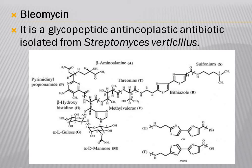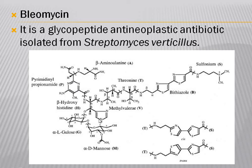The first part is the DNA binding domain, which consists of a sulfonium group and a bithiazole ring (two thiazole rings). There are two possible planar orientations — cis and trans — of the two thiazole rings in the bithiazole moiety. The second part is the linker domain, consisting of threonine and methyl valine. The third part is the metal binding domain, consisting of beta-amino alanine, pyrimidine propionamide, and beta-hydroxy histidine.